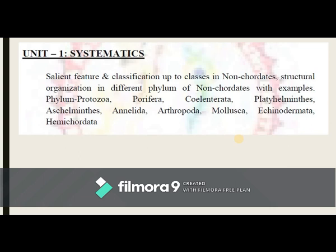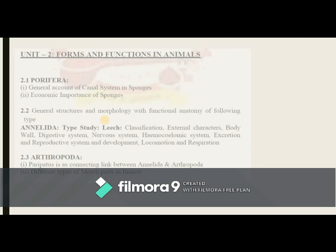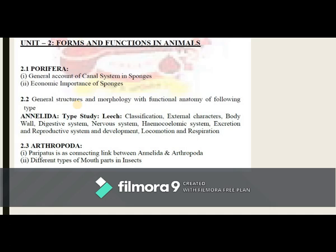In Unit 1, you have to study the cell features and classification of two classes of non-chordate animals, and the structural organization in different phyla of non-chordates with examples. The phyla are: Protozoa, Porifera, Coelenterata or Cnidaria, Platyhelminthes, Aschelminthes, Annelida, Arthropoda, Mollusca, Echinodermata, Hemichordata, and Urochordata.